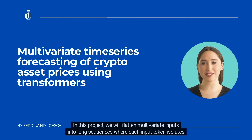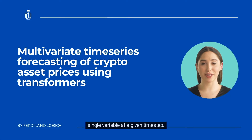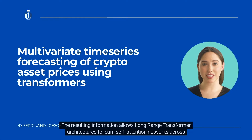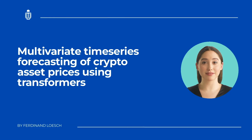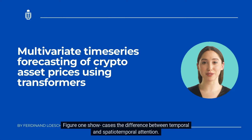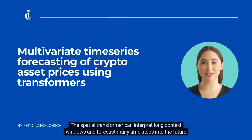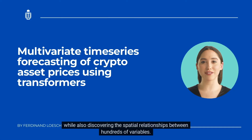In this project, we will flatten multivariate inputs into long sequences where each input token isolates the value of a single variable at a given time step. The resulting information allows long-range transformer architectures to learn self-attention networks across space and time jointly. This creates a spatio-temporal attention mechanism. Figure one showcases the difference between temporal and spatio-temporal attention — the spatial transformer can interpret long context windows and forecast many time steps into the future while also discovering spatial relationships between hundreds of variables.